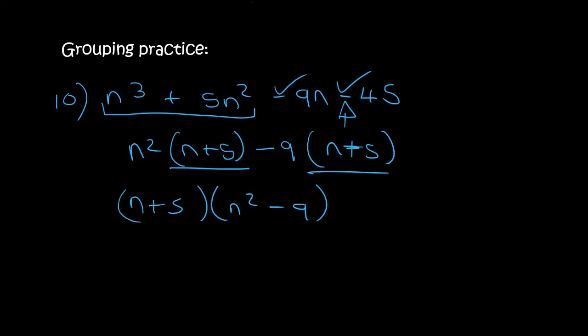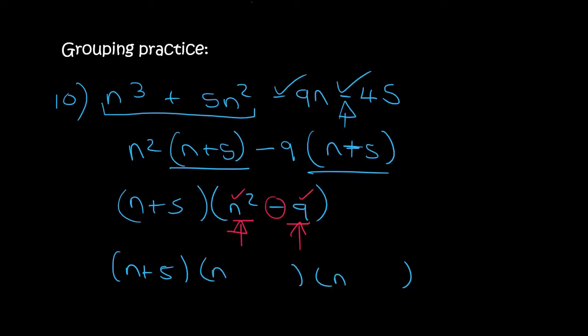Be careful — two terms with a minus, and each one is a perfect square: n times n gives you n squared and 3 times 3 gives you 9. So we carry on a little further by opening up two brackets using difference of squares: n plus 3 and n minus 3. That's grouping — we have now completed all the different types of factorizing, and so now it's just practice.